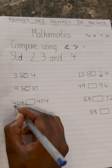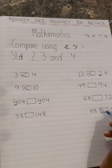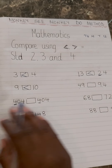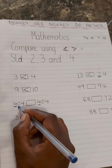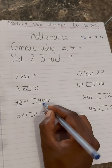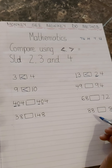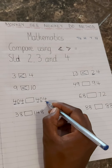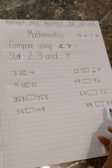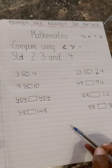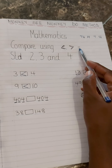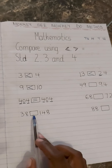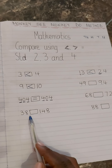Using the same method — Monkey See Monkey Do — underline the first digits on both left and right. If they are the same, you have to continue checking all of them. Underline the second digits — also the same. Then underline the units. If they are all the same, which means all these numbers are the same, you are going to use the equal sign to show that the numbers are equal.